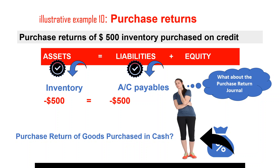What if those goods were purchased in cash? The accounting equation would record a decrease in inventory and an increase in cash if the suppliers immediately pay back the $500. It could be immediate cash received from the suppliers or received later — either way, both would be recognized under assets.